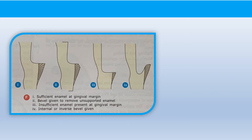Coming to the gingival margin — the decision to bevel it requires clinical judgment. In the first situation, the proximal box is shallow with sufficient enamel thickness well supported by dentine, so no beveling is needed. In the second situation, the box is shallow but there are unsupported enamel rods, so we bevel lightly to remove them without affecting enamel thickness. In the third situation, the box is deep, leaving insufficient enamel. We can produce an internal bevel to maintain enamel thickness, achieving an all-enamel margin with least micro-leakage.